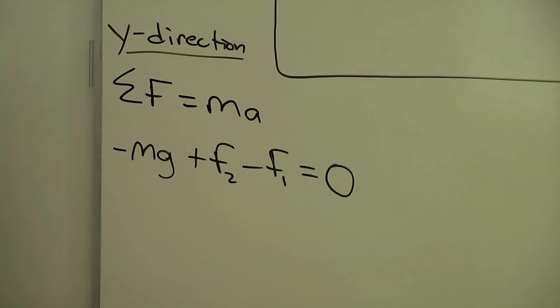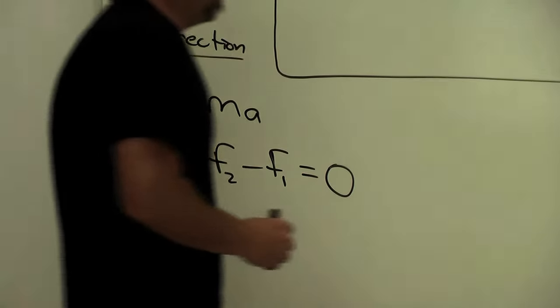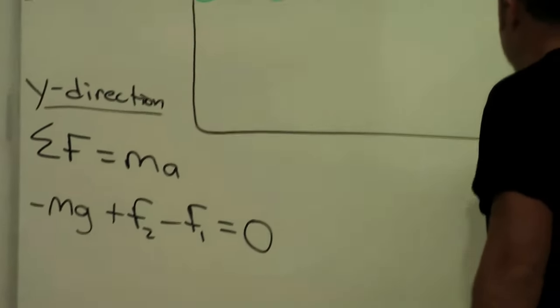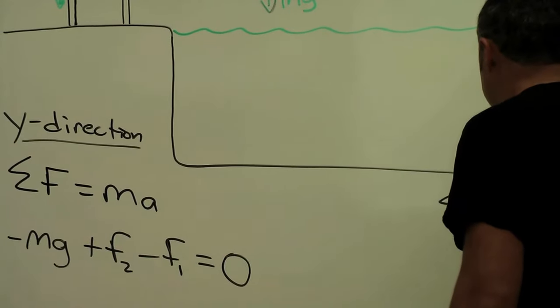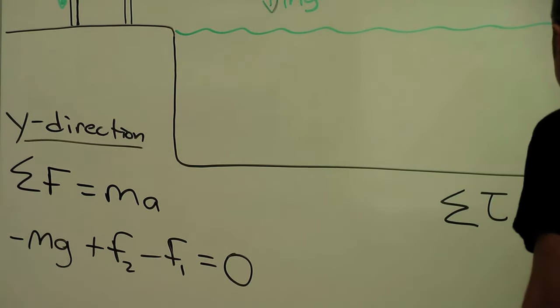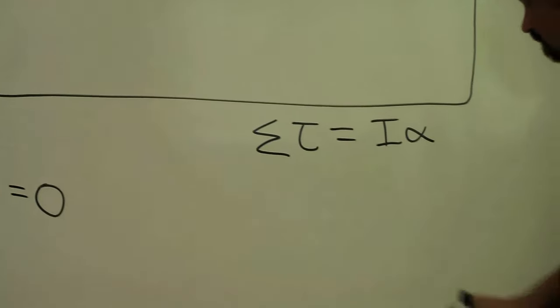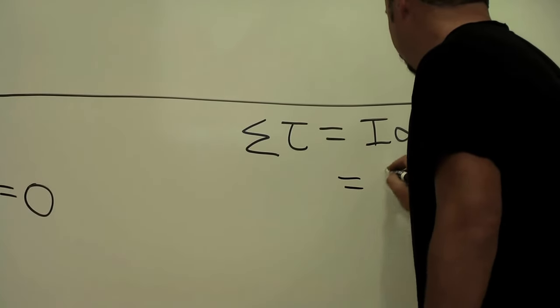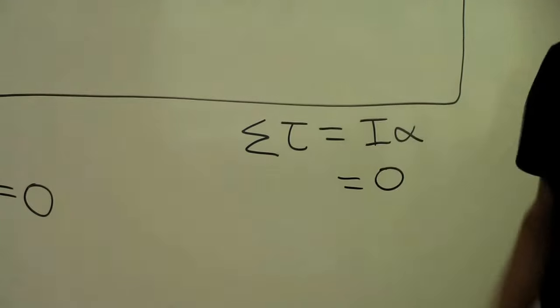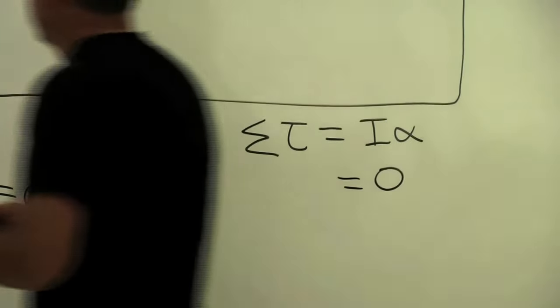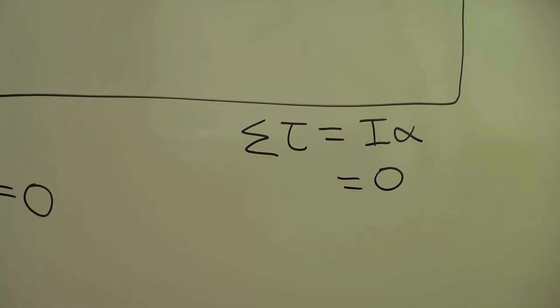So we need to think about torque as well. I'll put that over here. Sum of the torques equals the moment of inertia times the angular acceleration. This again is zero because he's not accelerating at the moment. And let's think about the torque. When you apply a torque problem you need to choose a pivot point.